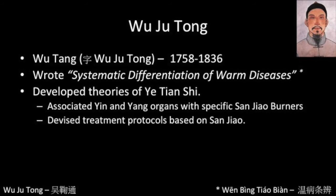Wu Zhutong expanded on the work of Ye Tian Shi. Unlike Ye Tian Shi, he didn't come from a family of doctors and only began to study medicine at the age of 19. He learned not by studying directly with other doctors, but rather by studying their texts. He wrote the Systematic Differentiation of Warm Diseases.